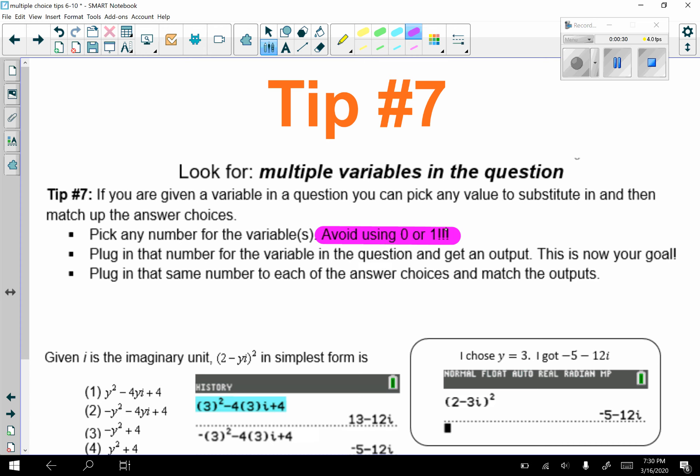If all of the answer choices or multiple answer choices work, then pick two different numbers, making one negative or so on. But usually it works with just choosing positive numbers.